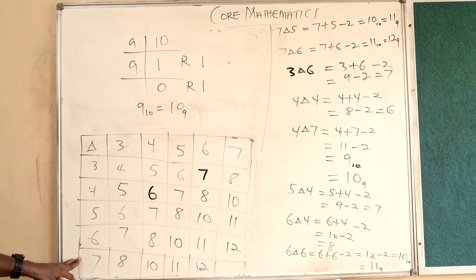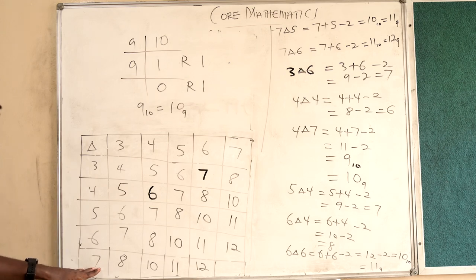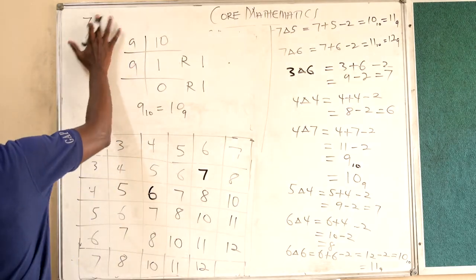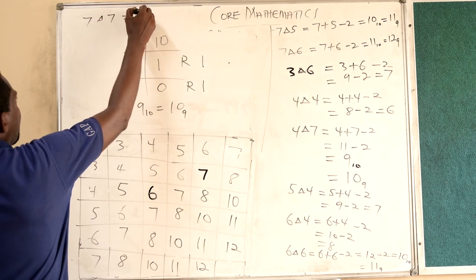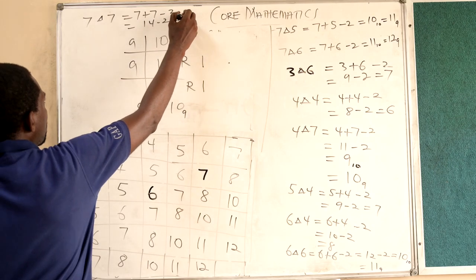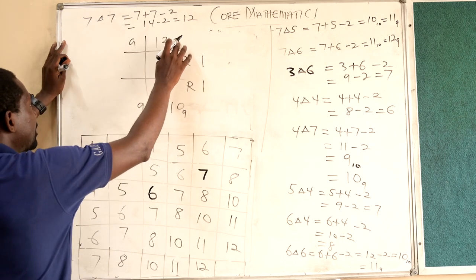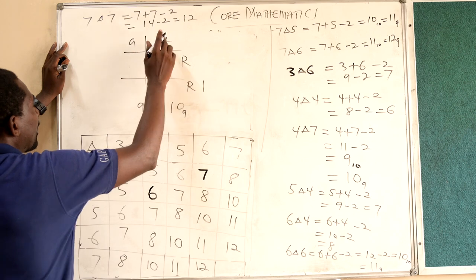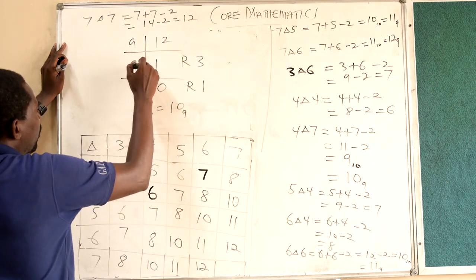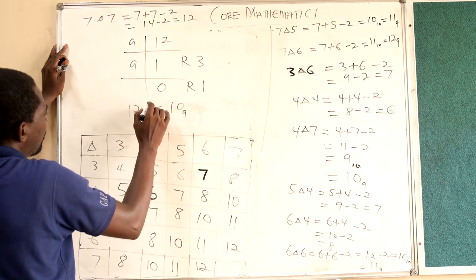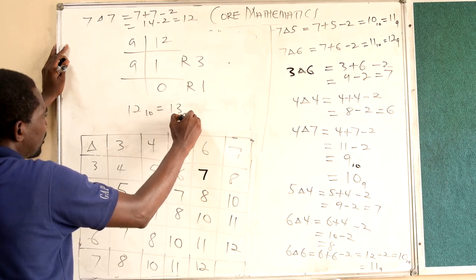Then we have 7 triangle 7: 7 plus 7 minus 2, which is 12. Now 9 goes into 12 once with remainder 3. So 12 in base 9 is 1 and 3. Therefore 7 triangle 7 is 1 3 in base 9.